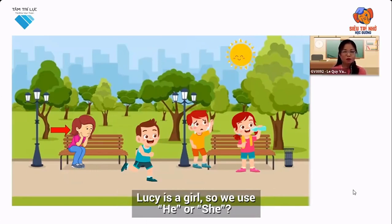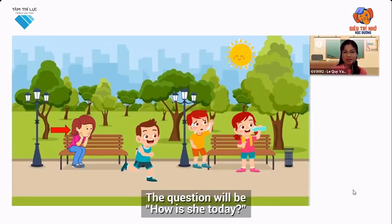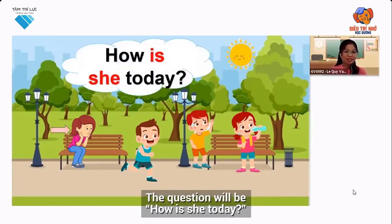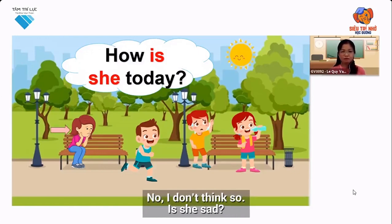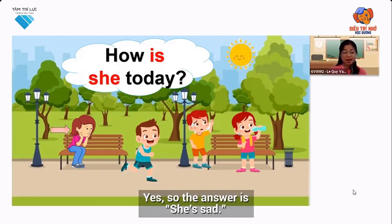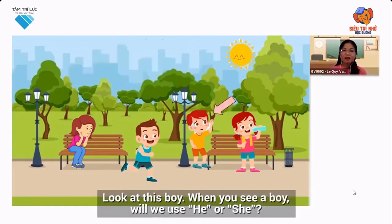Lucy is a girl, so do we use 'he' or 'she'? Correct, we use 'she.' The question will be: How is she today? Look at her face. Is she happy? No, I don't think so. Is she sad? Yes! So the answer is: she's sad.